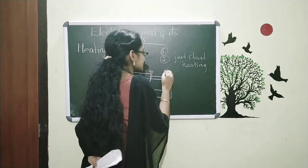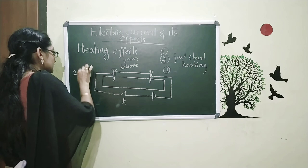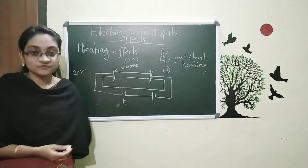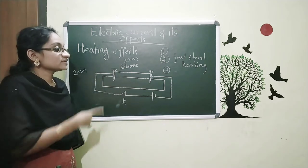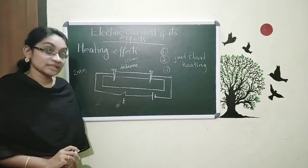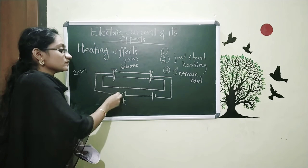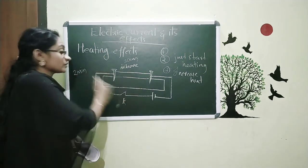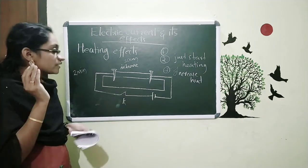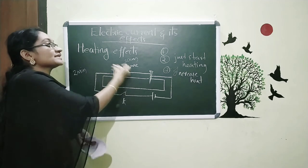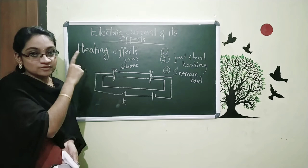That is the second case — it starts heating. In the third case, I am waiting for two minutes, then again touch it. You can feel that the heat is increasing. When electricity is continuously flowing through the circuit, the heat increases. What is taking place here is the heating effects of electric current.